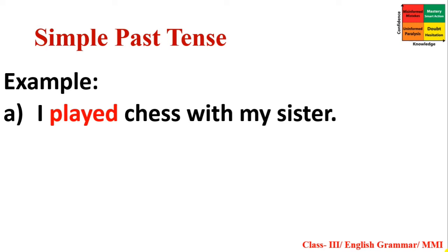Example: 'I played chess with my sister.' Here I have used 'played,' which is the past form of 'play.' This is an example of Simple Past Tense. But if I say 'I play chess with my sister,' that is Simple Present Tense. Whenever we change the verb, the tense also changes.